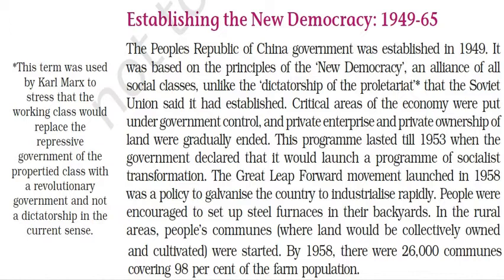Establishing the New Democracy, 1949 to 1965. The People's Republic of China government was established in 1949. It was based on the principle of the New Democracy — an alliance of all social classes — unlike the dictatorship of the proletariat that the Soviet Union had established. Critical areas of the economy were put under government control, and private enterprise and private ownership of land were gradually ended. This program lasted till 1953, when the government declared that it would launch a program of socialist transformation.